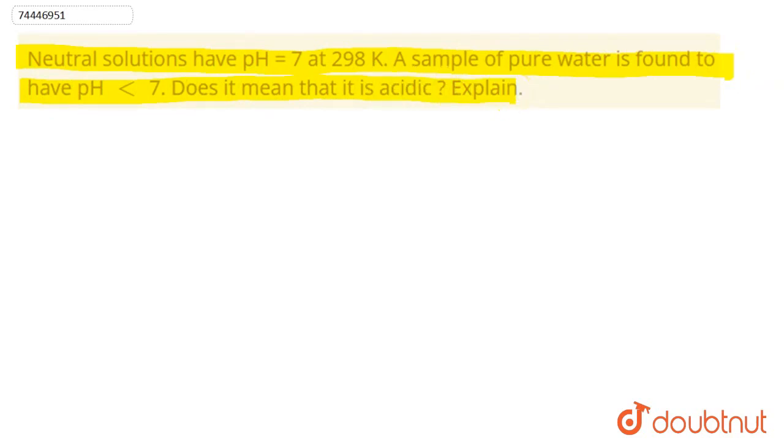Explain. So this question says that neutral solutions pH is 7 at 298 Kelvin. Now, there is a pure sample of water. The pH is less than 7. So what does this mean? Does it mean that it is acidic? Let's explain.